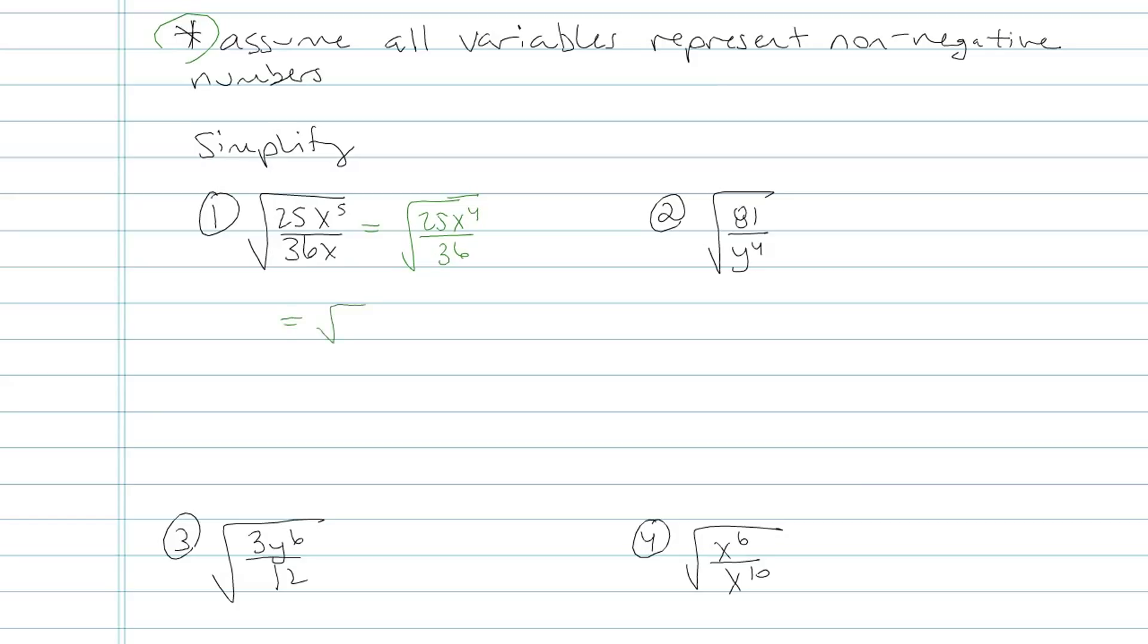Now I can rewrite that as square root of 25 on top times square root of x squared times square root of x squared, because x to the fourth is x squared times x squared. My bottom would be root 36.